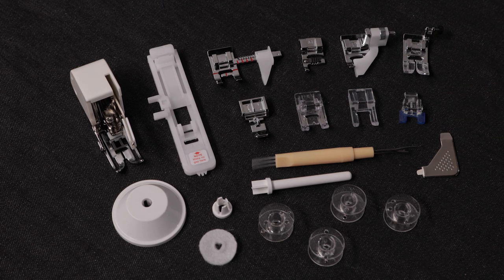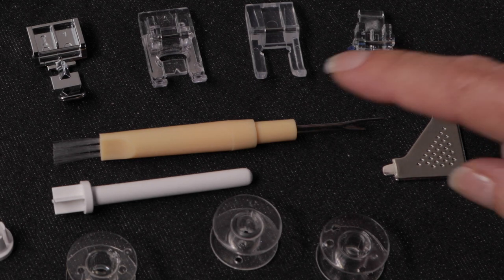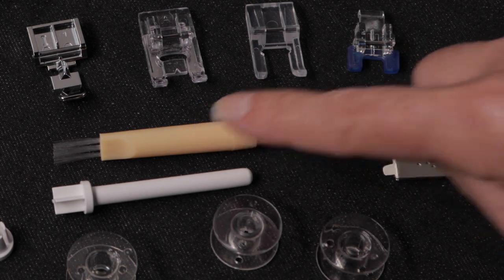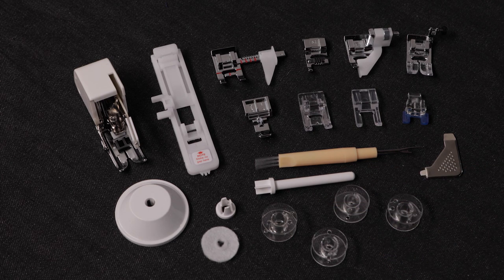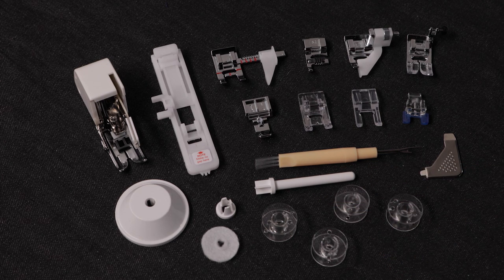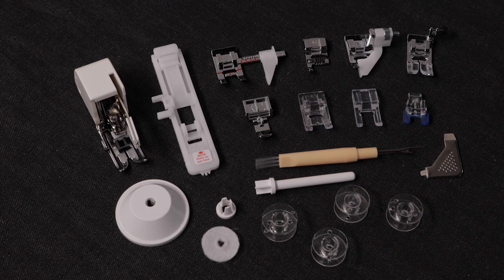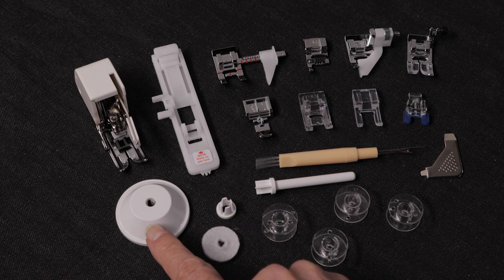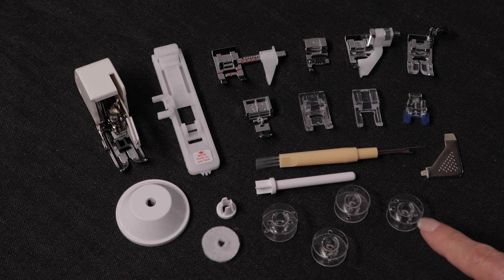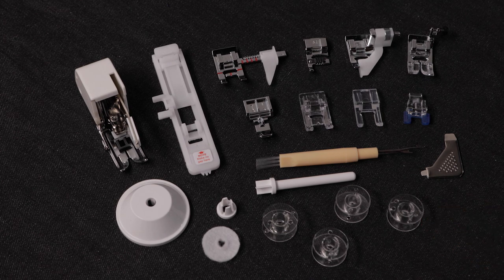This is your screwdriver, your seam ripper and lint brush. This is your auxiliary spool pin that you would put on the top of the machine if you want to sew with thread in vertical position. When you use the auxiliary spool pin you'll also use the spool pin felt. This is the small spool cap, the large spool cap, and these are four Singer class 15 transparent bobbins. One is already in the machine when you open the box.